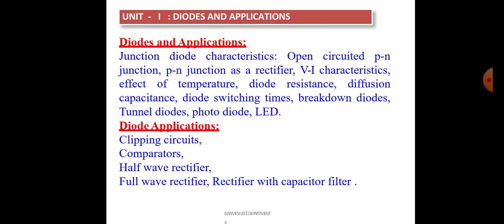N-type material means if you add pentavalent impurities to a pure semiconductor, it becomes N-type material. N-type material has majority charge carriers as electrons and minority charge carriers as holes. N-type material contains donor ions.